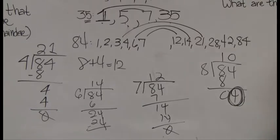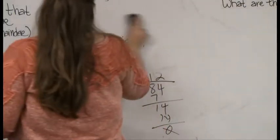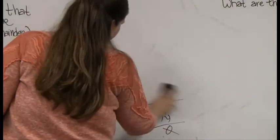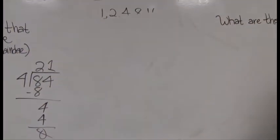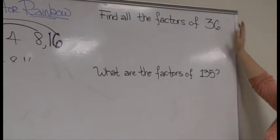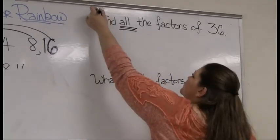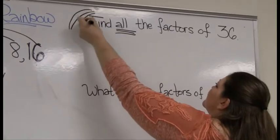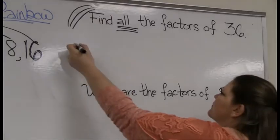Good news: I chose 84 on purpose because it has a lot of factors — most numbers don't have that many. Let's look at some GED examples. They could ask you to find all the factors of 36. Whenever I see the word 'all,' I know the tool I need is the factor rainbow, and that's what we're going to use — just like we did before.